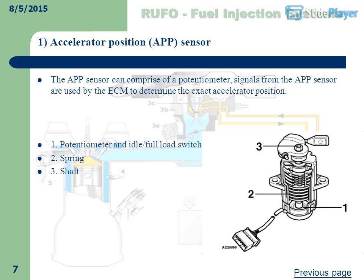Accelerator Position (APP) Sensor: Results from the APP sensor are used by the ECM to determine the exact accelerator position. Its components include a potentiometer with idle/full load switch, a spring, and a shaft.